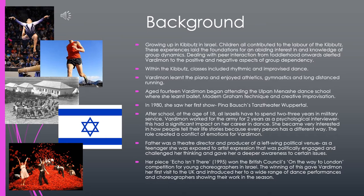Her father was a theatre director and producer of a very left-wing political venue, which produced collaborative work between Israeli directors and actors. As a teenager, this exposed her to real artistic expression that was politically engaged and challenged her thinking and deeper awareness of things. Her piece Echo Isn't There, in 1995, won the British Council's On The Way To London competition for young choreographers in Israel, and winning this gave her her first visit to the UK, introducing her to a wide range of dance performances and choreographers.